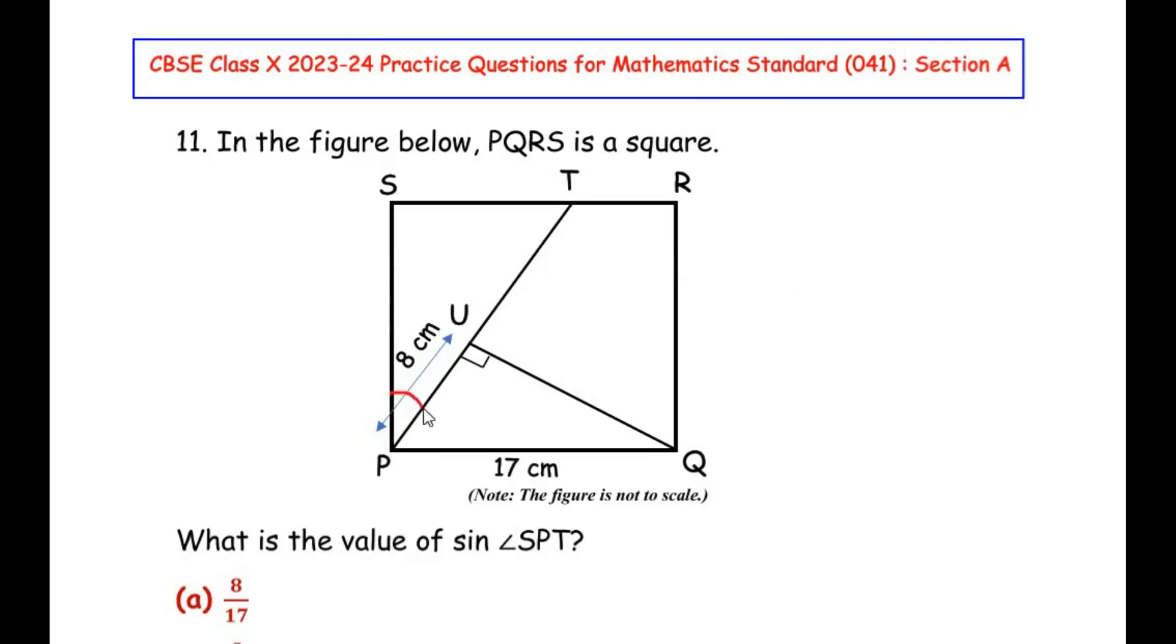So this is what we need to find, that is sine of this angle SPT. Now since they have given that PQRS is a square, each angle of the square is going to be 90 degrees. That is the property of the square, so let us mark here each angle is 90 degrees.